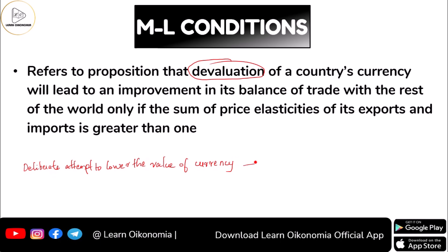Why does this happen? Basically, devaluation is made to increase exports and to reduce imports. This is the main intention of the government when it goes for devaluation — we mostly want to promote our exports and we want to discourage our imports.